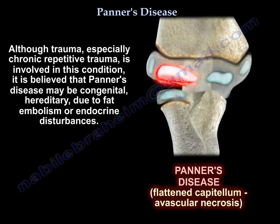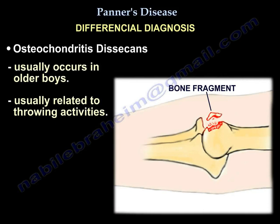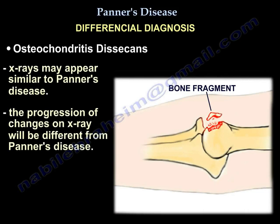Although trauma — especially chronic repetitive trauma — is involved in this condition, some people think it is congenital, hereditary, or related to embolism, possibly fat embolism, or due to endocrine disturbance. The differential diagnosis is osteochondritis dissecans of the capitulum, which usually occurs in older boys and is usually related to throwing activities. The x-rays may look similar, but the changes and progression of changes on x-rays will be different.